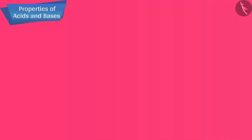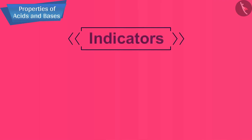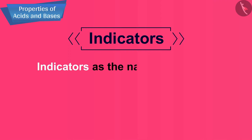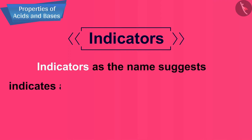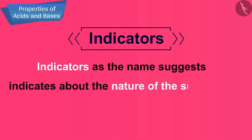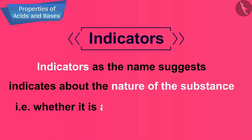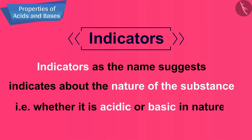Let us now talk about what are indicators. Indicators, as the name suggests, indicate about the nature of the substance — that is, whether it is acidic or basic in nature.